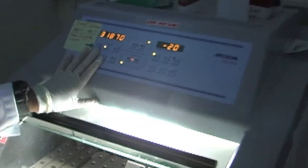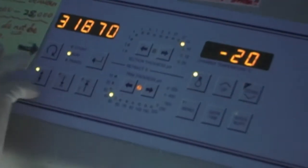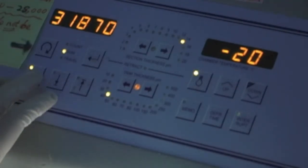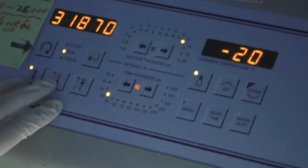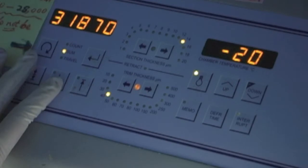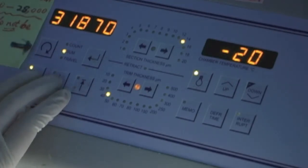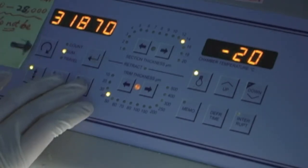In order to begin cutting the brain, we must first make sure that the Cryostat is on the correct settings for brain verification. Using this control panel, we can control everything about the Cryostat, from the thickness of the slices to the temperature of the machine.